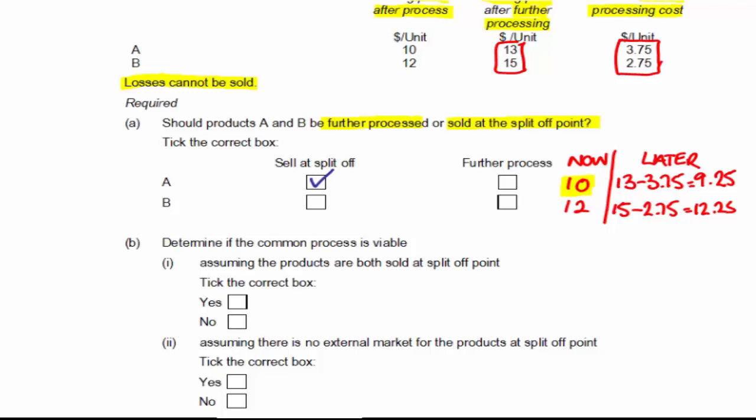For product B, the correct answer is going to be to further process because we get $0.25 more when we further process over if we sold it at the split off point.